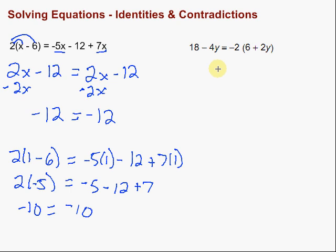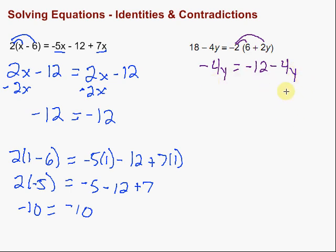Let's look at this one over here. We've got some distribution to do in order to get rid of those parentheses. We have negative 4y on the left equals — take that negative 2 and distribute it through — negative 12. Negative 2 times 2y would be negative 4y. Now I've got to get all my variables on the same side, so I'm going to add 4y to both sides.